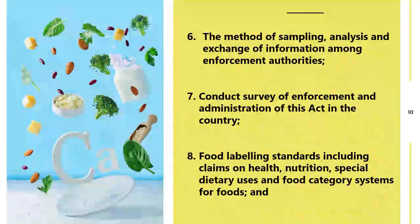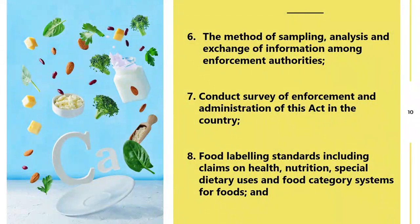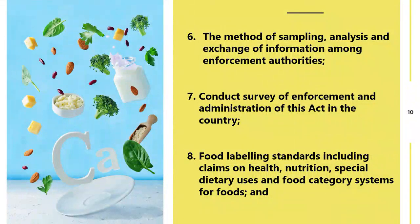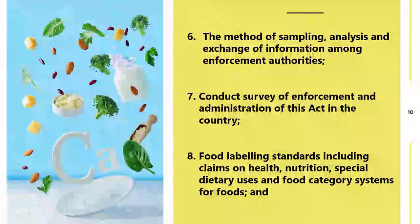Sixth point: the method of sampling, analysis, and exchange of information among enforcement agencies. Method of sampling means if a food safety officer goes to a site and has to collect a sample, what method will be followed — because FSSAI has given a whole procedure for sampling. When that sample goes to the food analyst, how to analyse it follows a standard procedure, and there is also exchange of information among enforcement authorities.